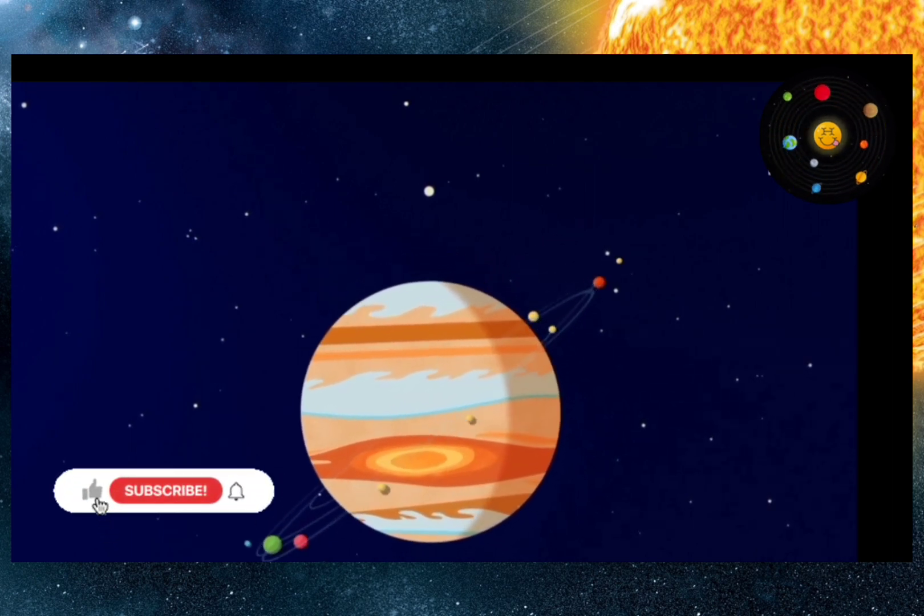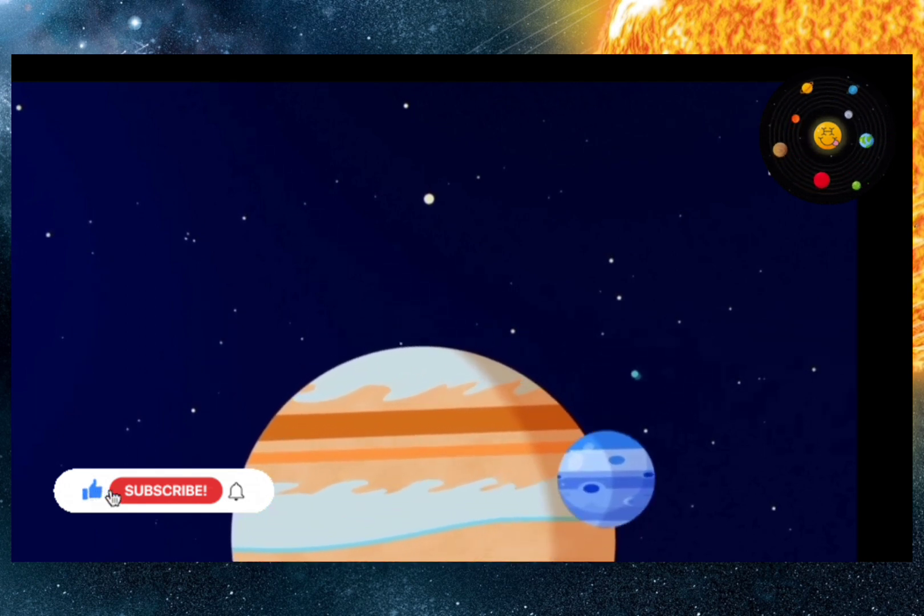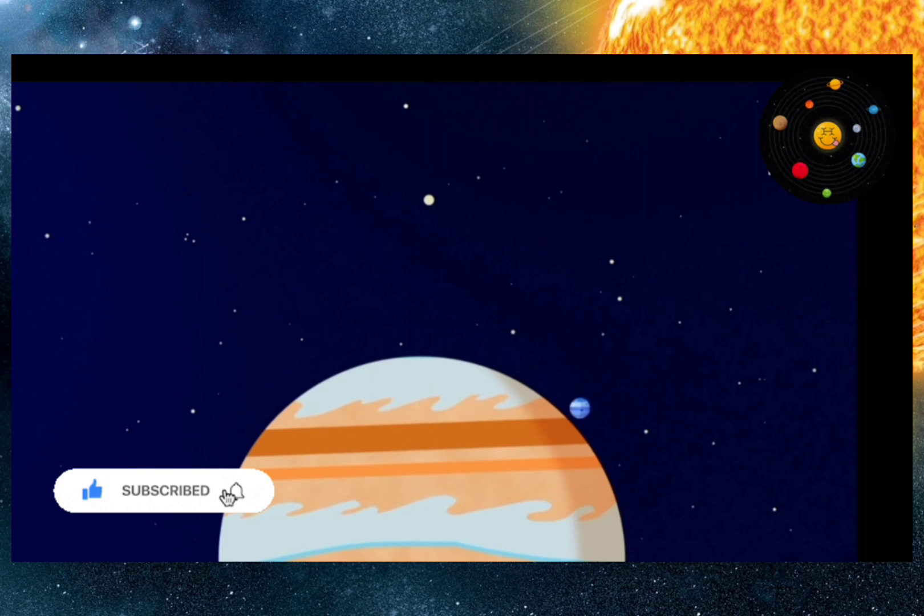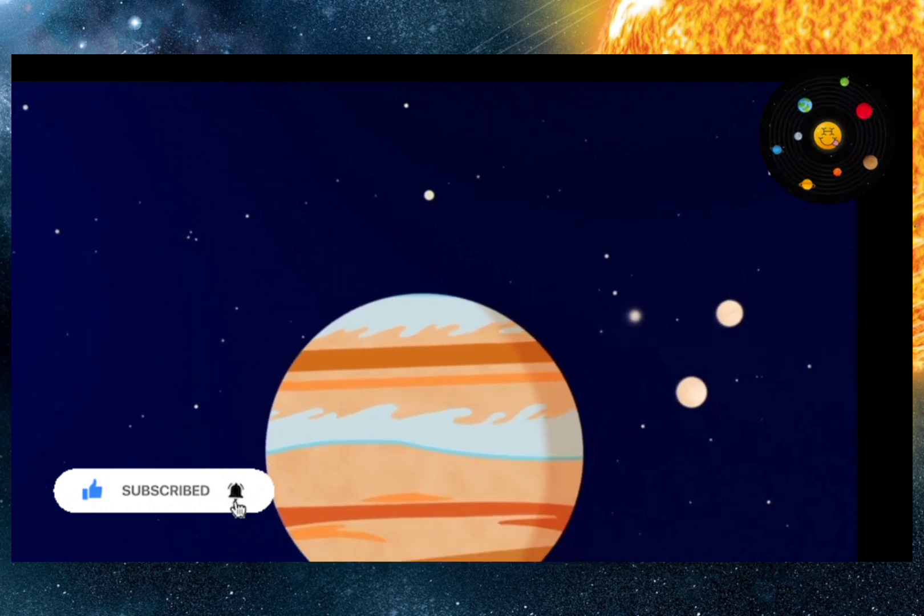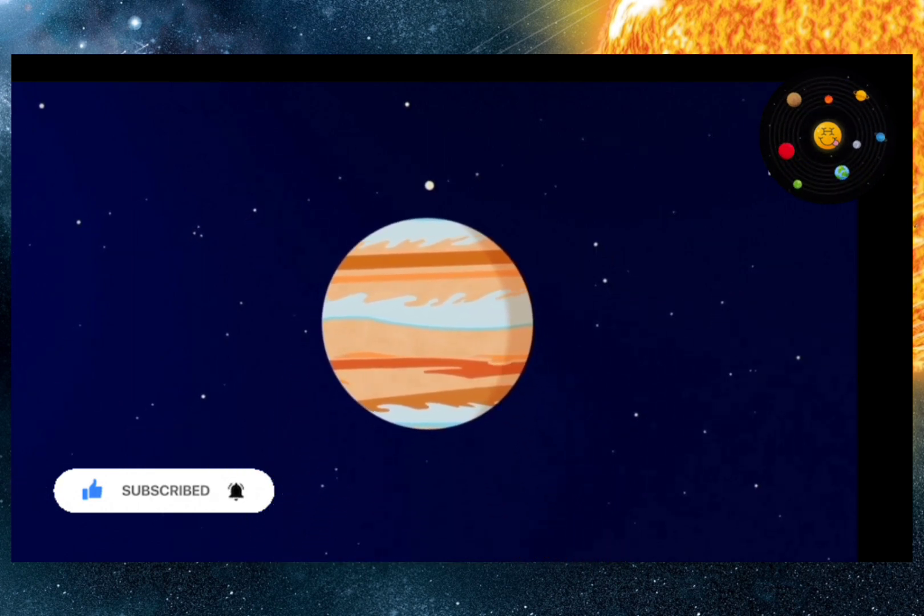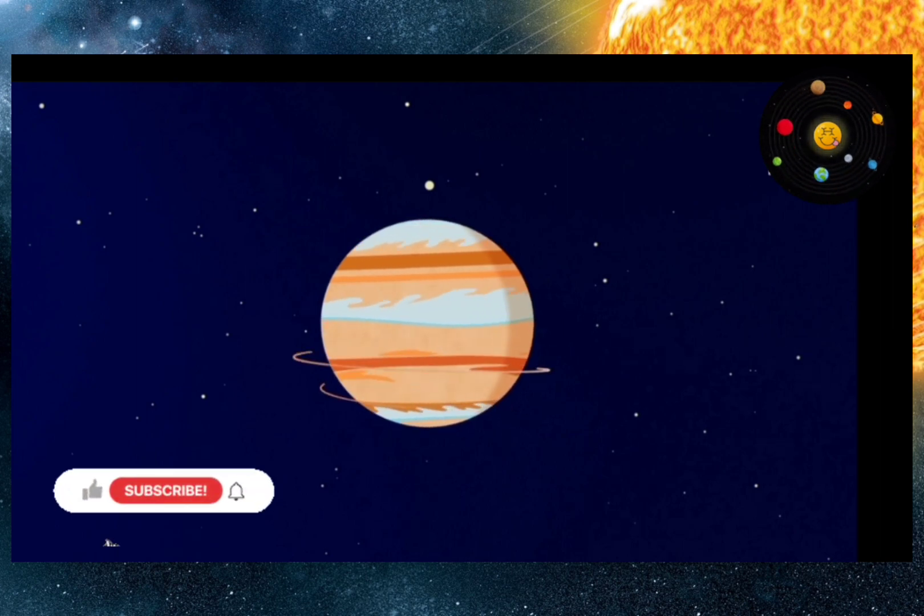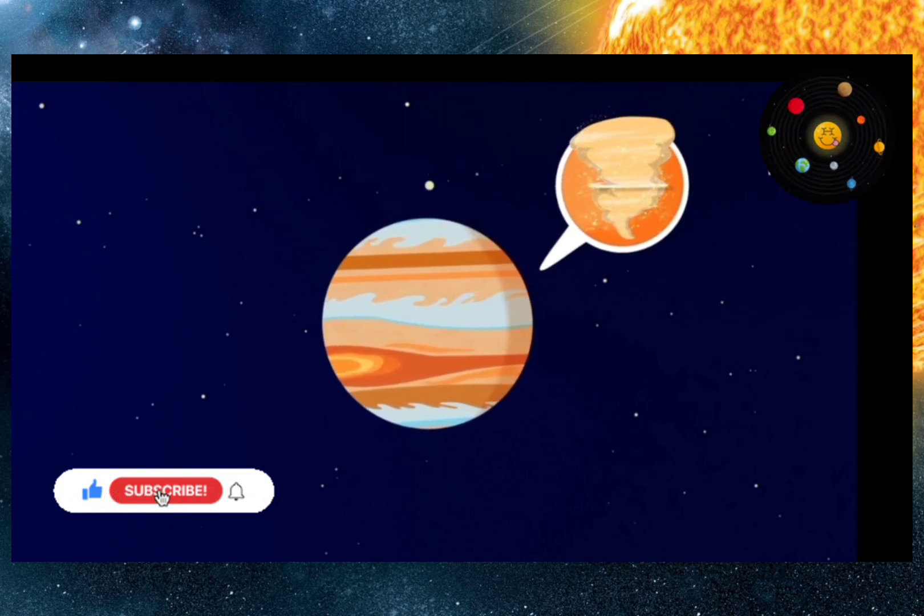The largest of them is even bigger than Mercury. You can't land on Jupiter because it's almost entirely made of gas. Every revolution around its axis takes only 10 hours. This crazy speed causes different atmospheric phenomena, such as hurricanes and storms.